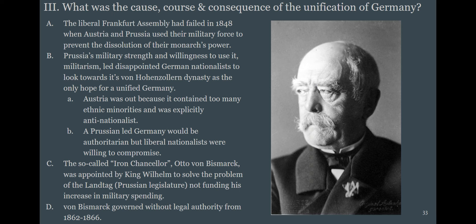The gentleman in the picture is Otto von Bismarck. Germany could have unified as a liberal, constitutional nation if the Frankfurt Assembly in 1848's revolution had succeeded, but Austria and Prussia teamed up to smash that parliament of professors. Prussia is a military, authoritarian state with militarism as the order of the day.